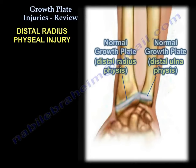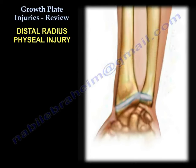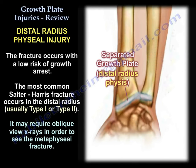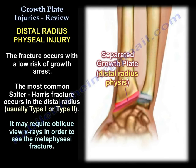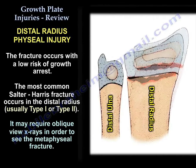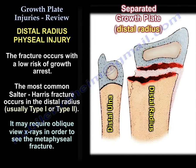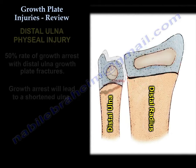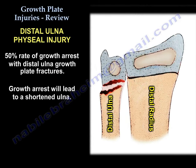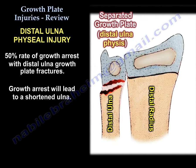For the distal radius, fractures occur with a low risk of growth arrest. The most common Salter-Harris fractures occur here, usually Type 1 or Type 2; oblique views may be needed to see the metaphyseal fracture. If the fracture occurs in the distal ulna, there is a 50% rate of growth arrest, which will lead to a shortened ulna.